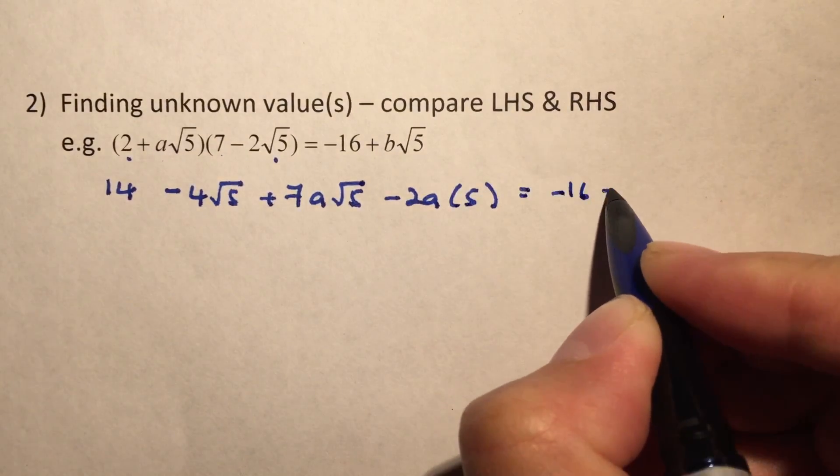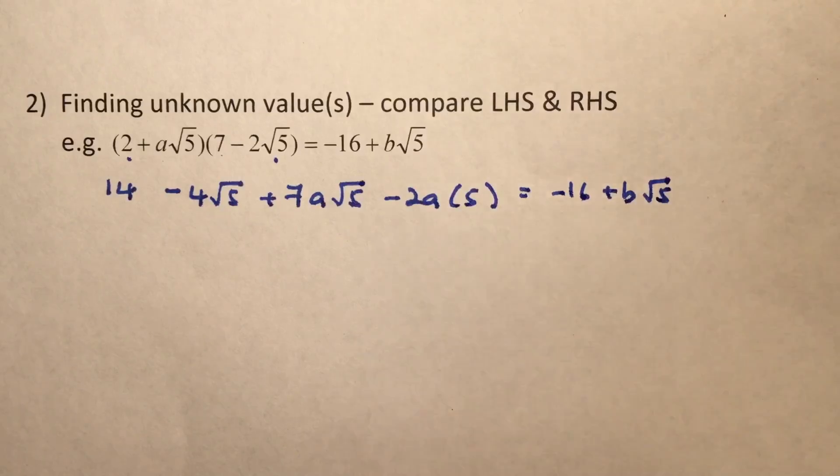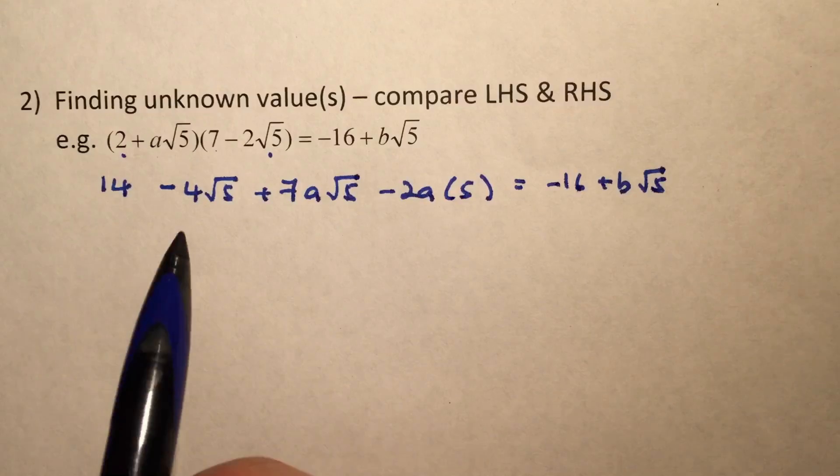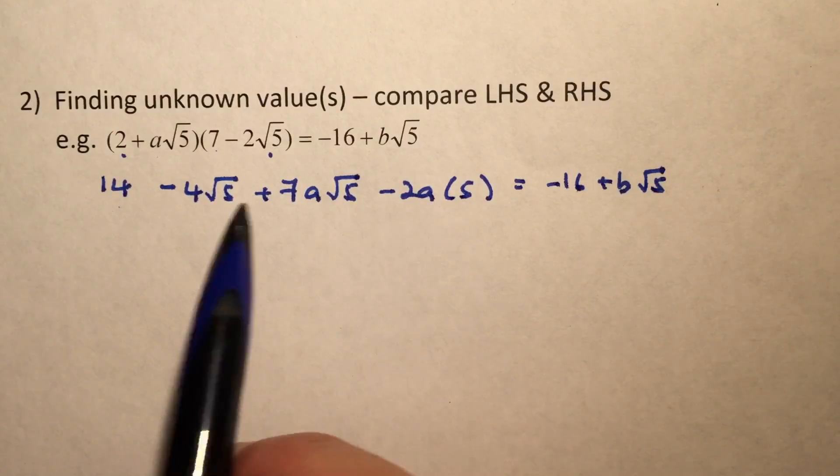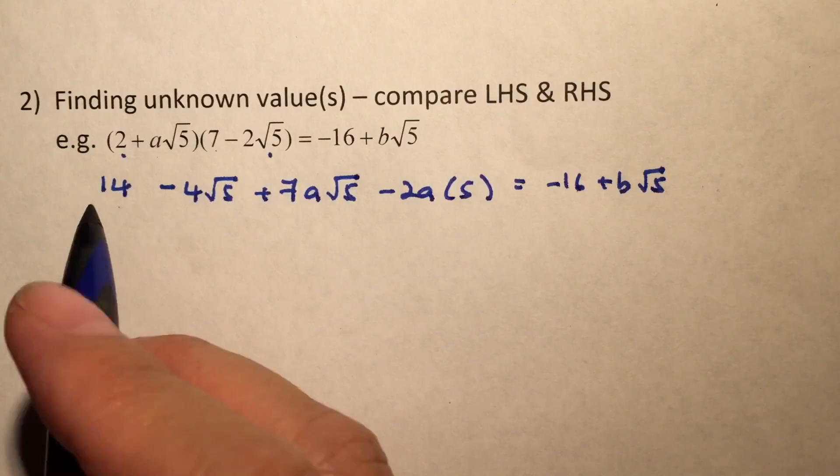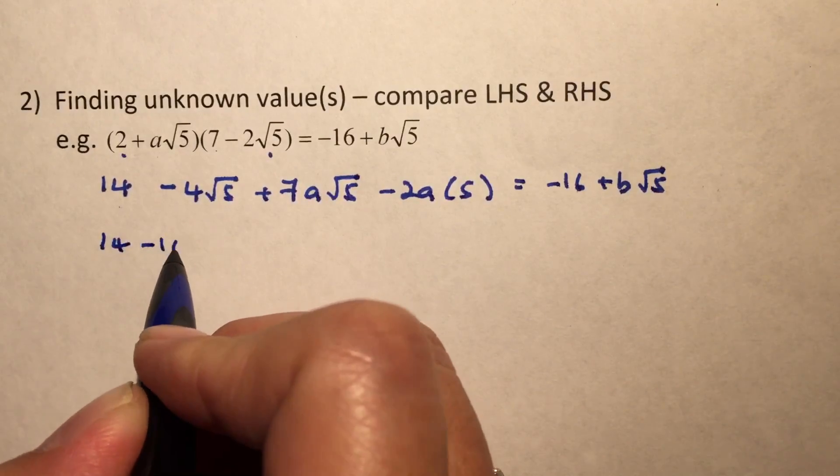And I will just simply copy out whatever is on the right-hand side. Now next, we can actually group up the terms. As you can see, these are the terms where we don't have any surd terms. So these are the rational terms. So we have 14 minus 10A.